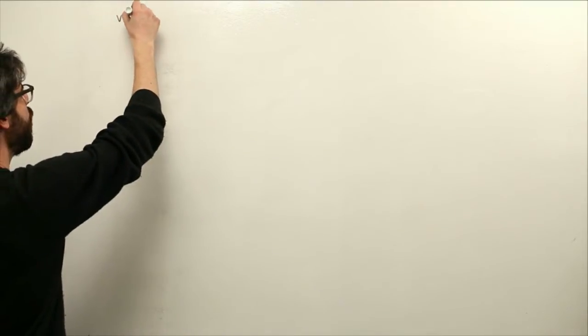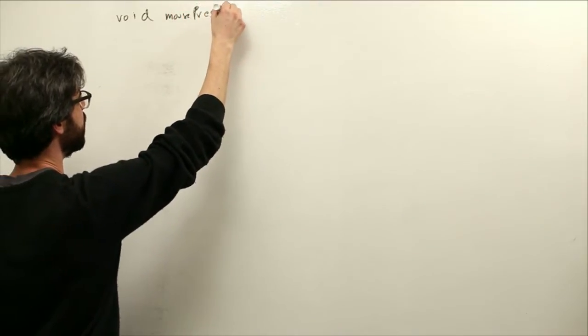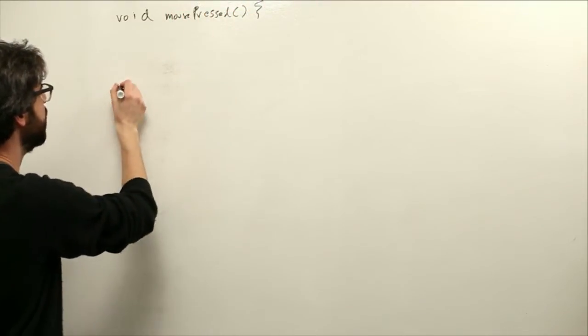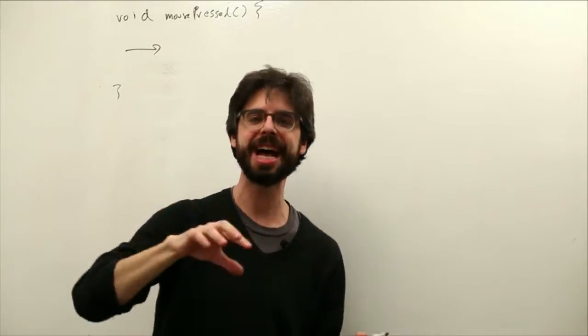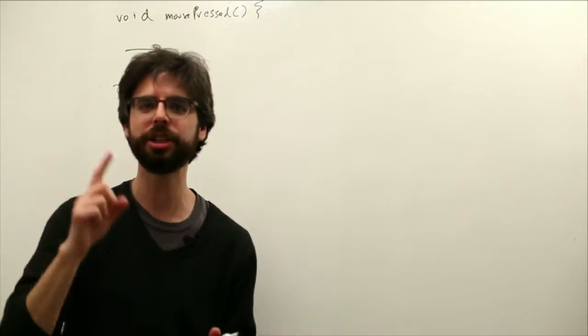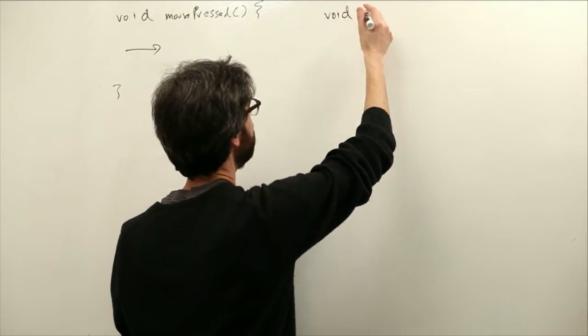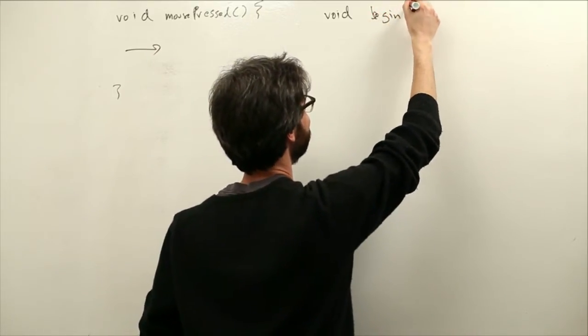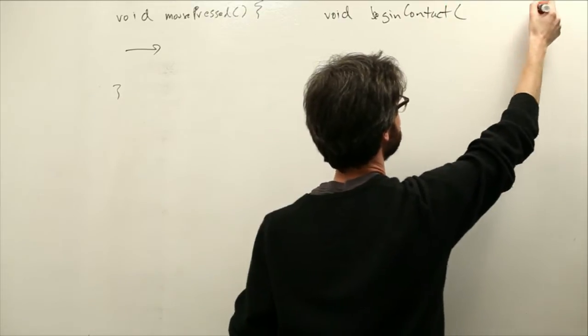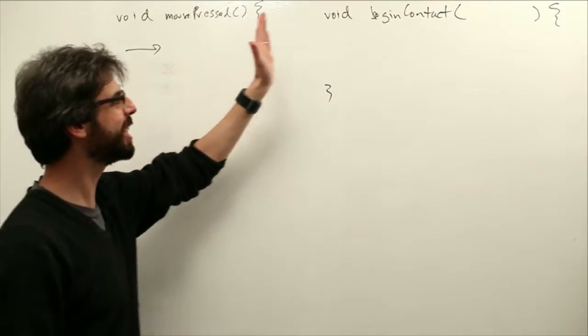In the same way that in Processing, you can say void mousePressed and trigger some code when a mouse press event happens, you can also in Box2D say void beginContact. Now, there's a little bit more to it, but this is really an analogous scenario.